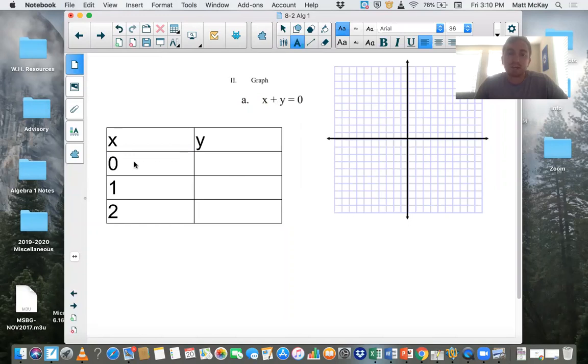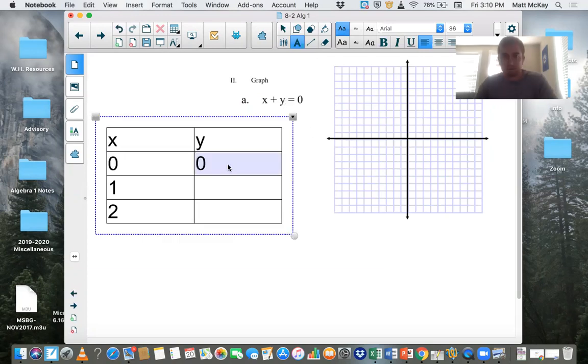So for this equation, if we plug in a zero for x, what is y going to equal? In other words, zero plus y equals zero. Y would have to also be zero. If we plug in one for x, one plus y equals zero. Y would equal negative one. And then if we plugged in two for x, y would equal negative two.